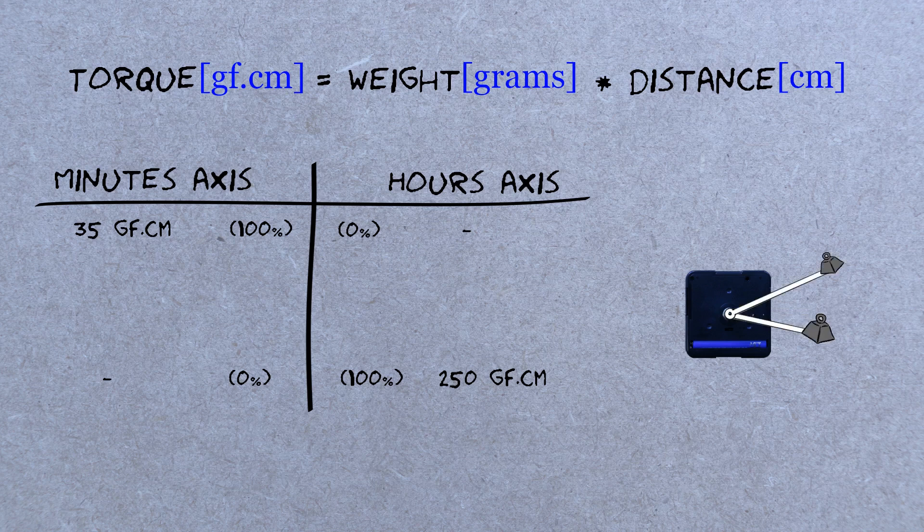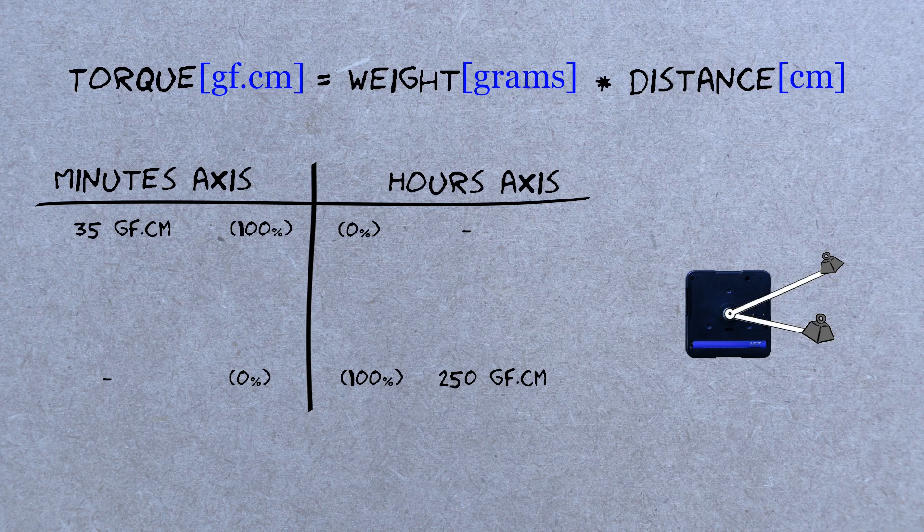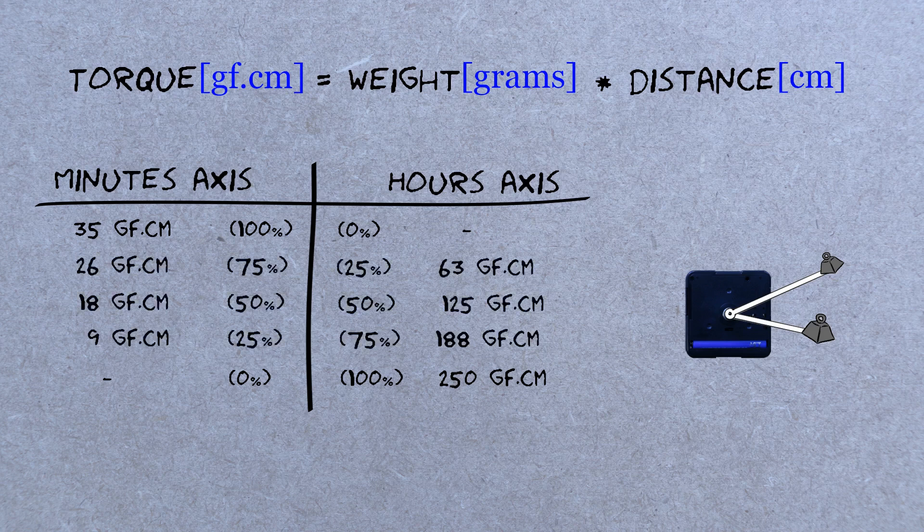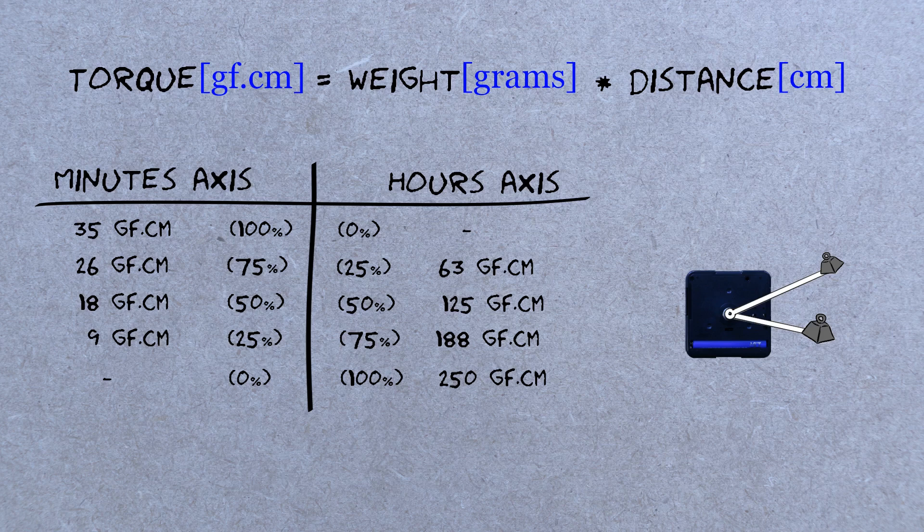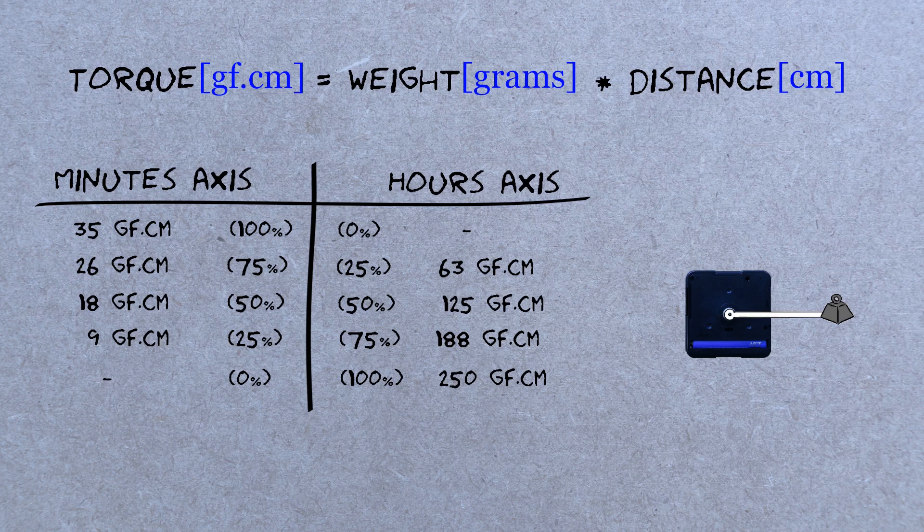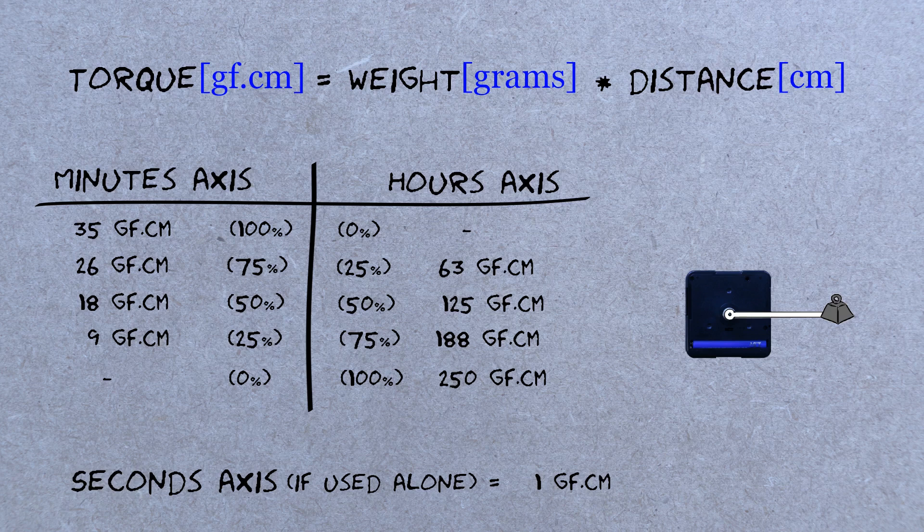Now, if we want to use both the minutes and the hours axis at the same time, then to figure out how much torque is available on each axis. The easiest is probably just to look at the percentage of the maximum torque on each axis. So, for example, we could use 80% on the minutes axis and 20% on the hours axis. Oh, and the axis for the seconds. This one is very, very weak and really tricky to measure, but it seems that it can provide up to about 1 gram force centimeters if it is used alone.